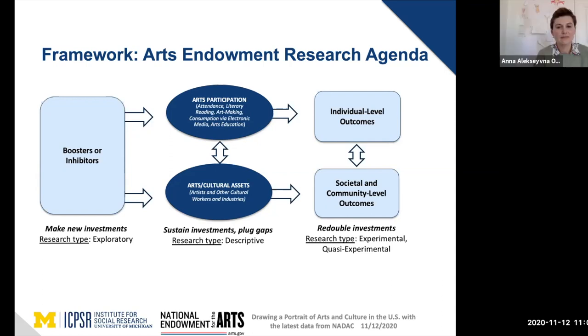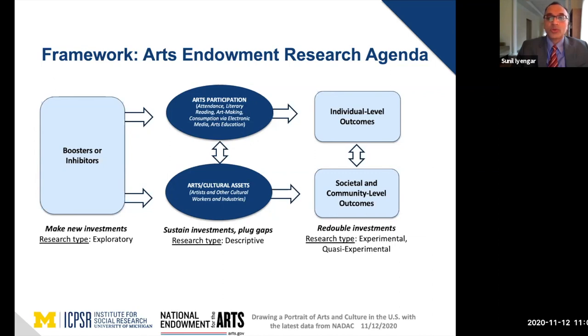The third column, on the far right, covers individual and societal outcomes from arts participation or arts infrastructure — whether health-related, social or emotional benefits, or civic and economic outcomes.